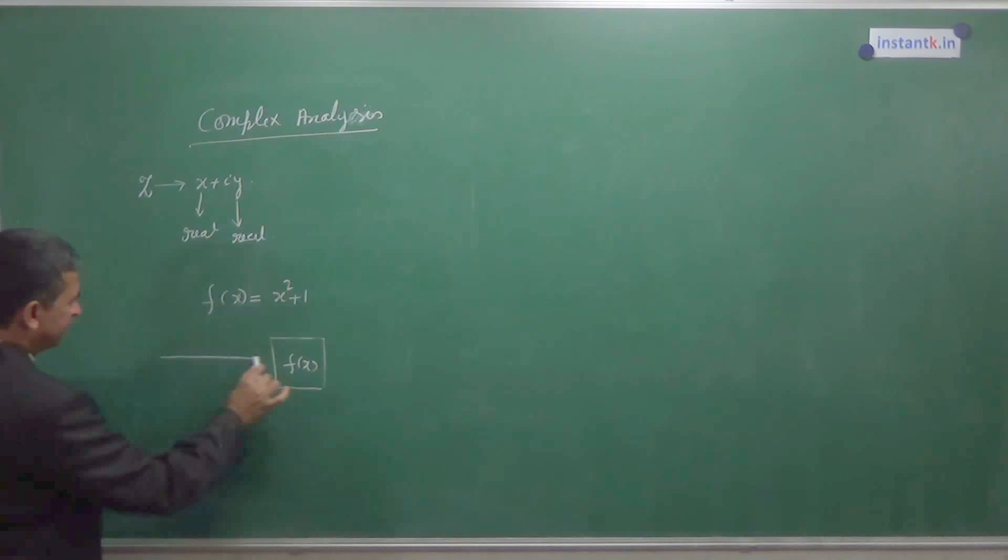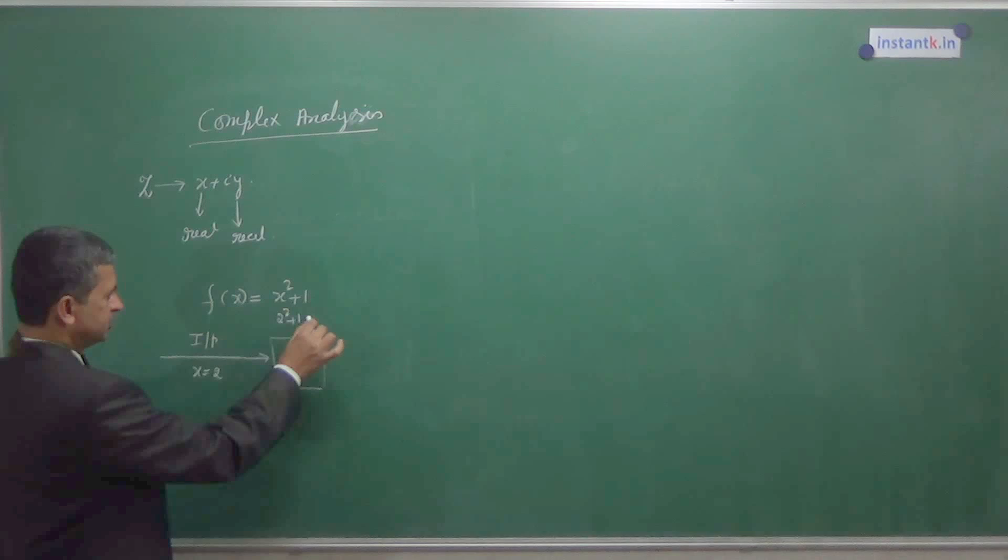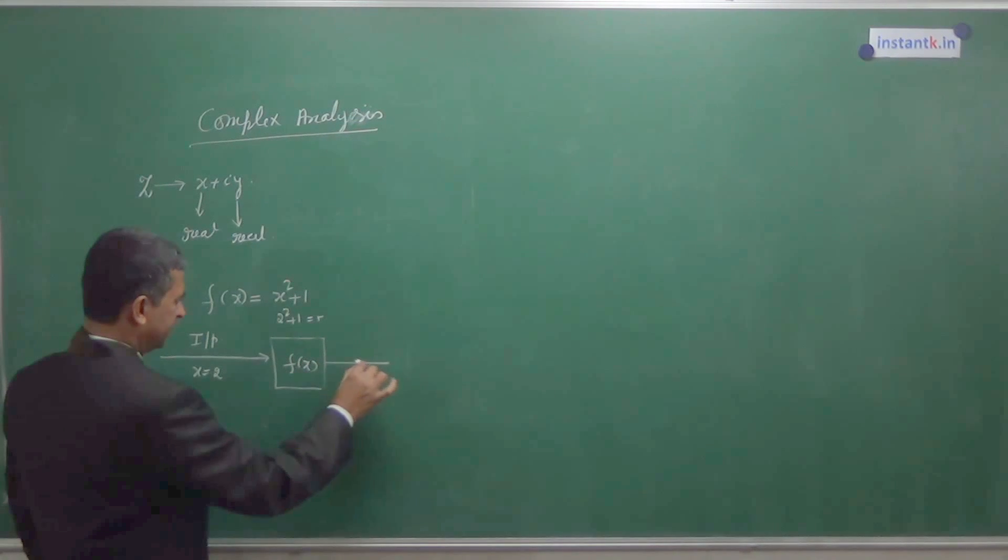We take now X value. X value is my input. If I take input X equal to 2, if I give X equal to 2, this becomes now 2 square plus 1. So this is 5. So what I am getting is output is 5.